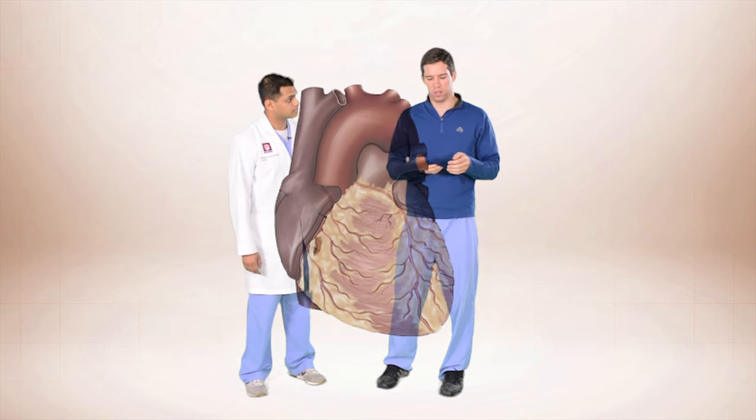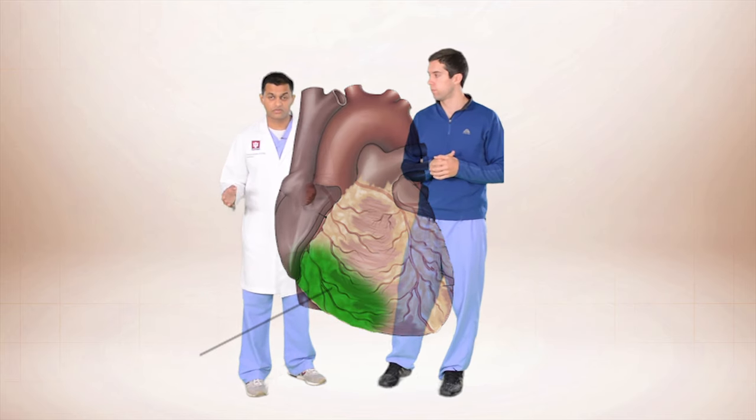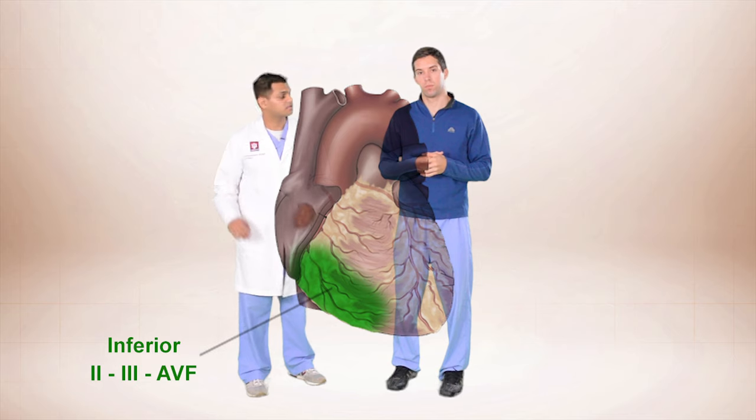So if we had an inferior infarct, which leads would be involved? So that would be 2, 3, and AVF.